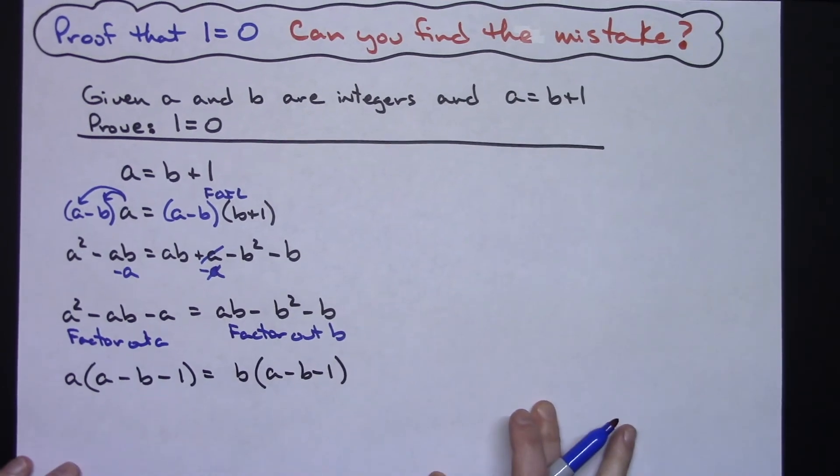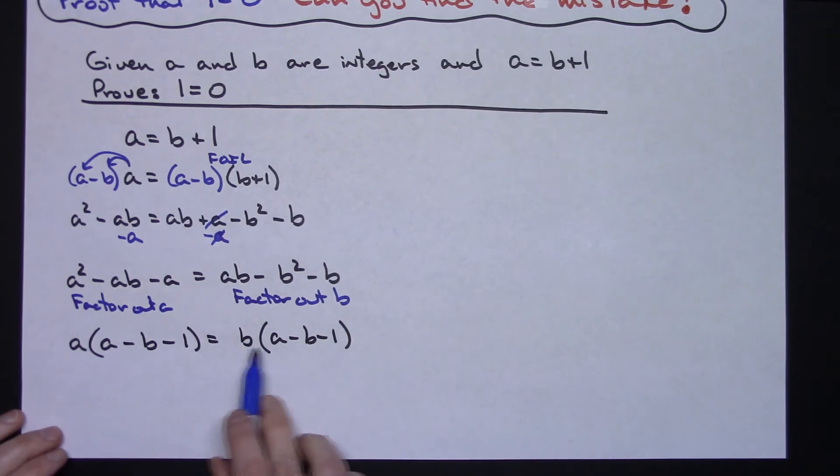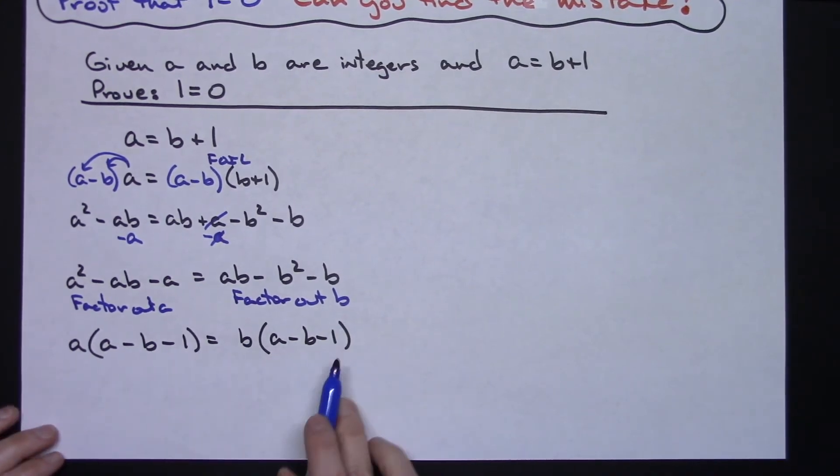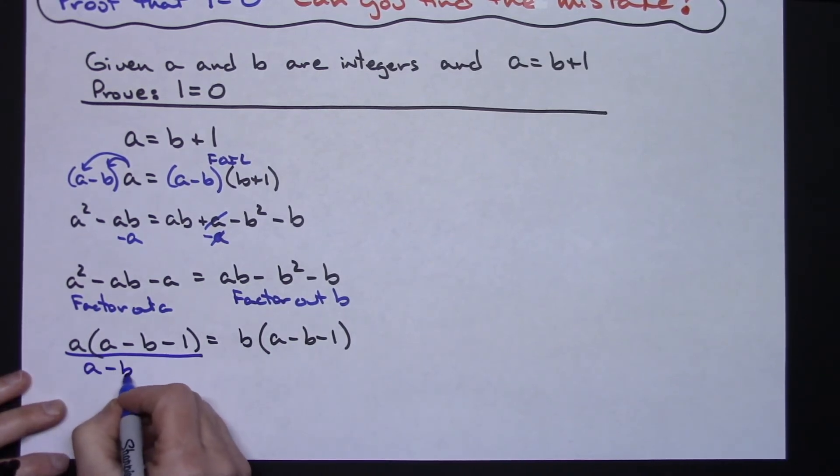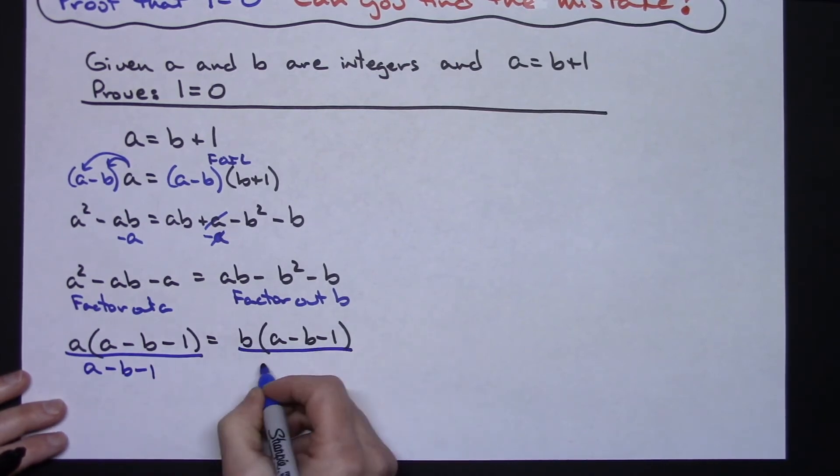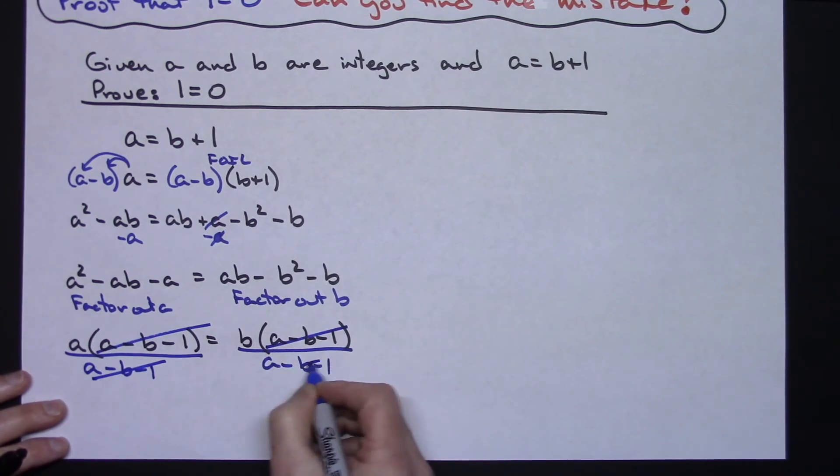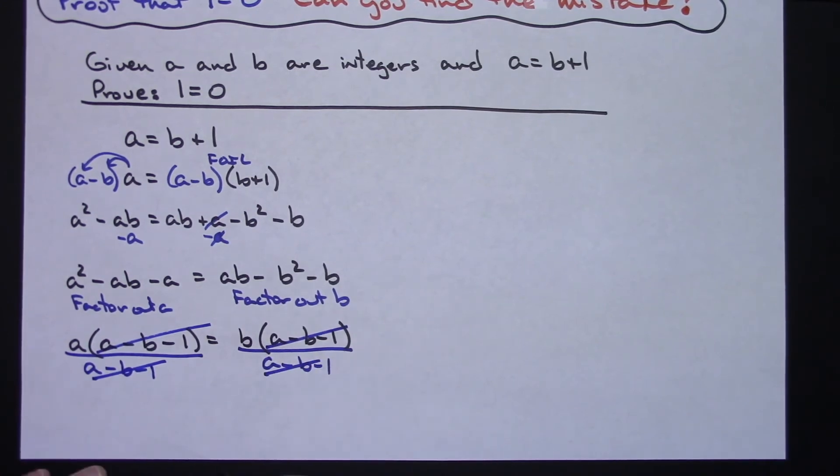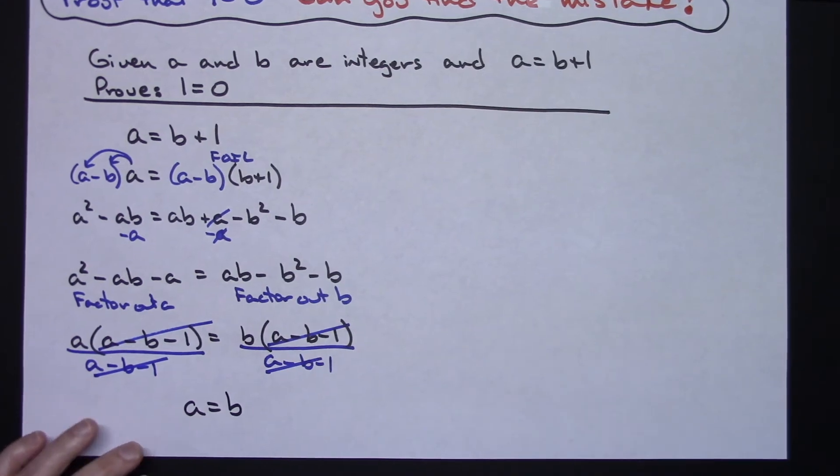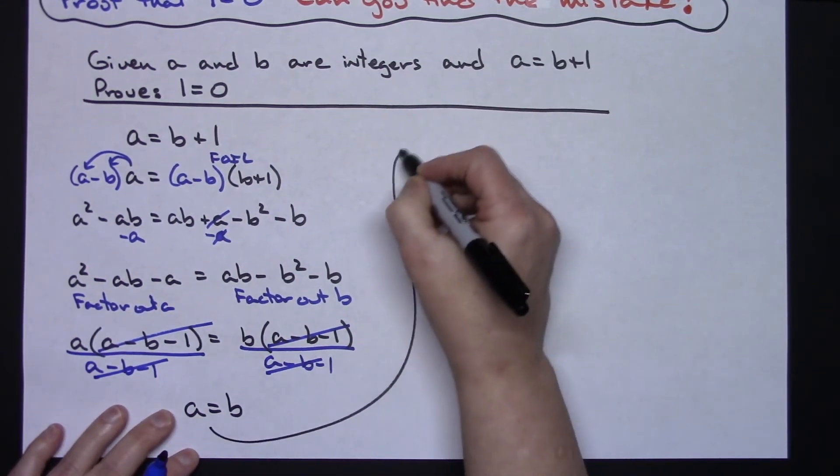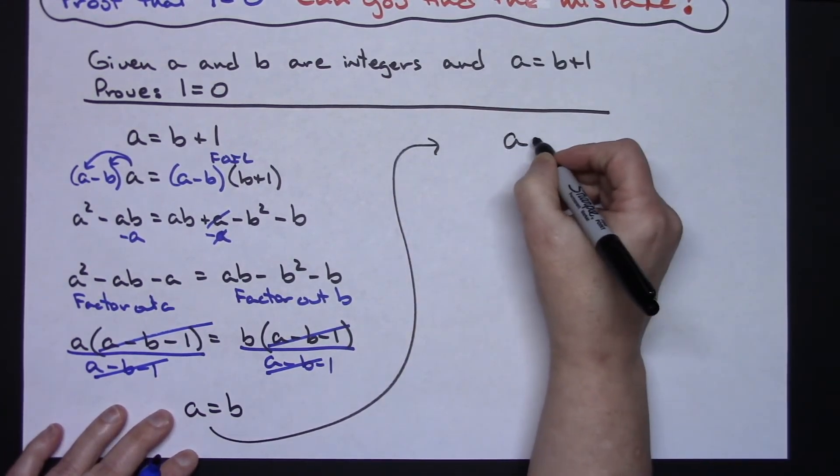Now at this point I'm going to divide both sides of the equation by a minus b minus 1, because if I divide both sides of the equation by the same thing, I'm keeping the equation balanced. So a minus b minus 1 on this side, divide this side by a minus b minus 1, those two quantities will go away, those two quantities will go away, and then I've got a equals b.